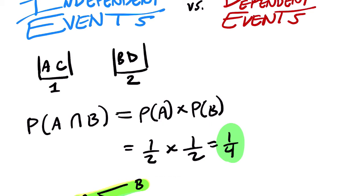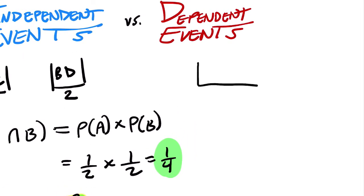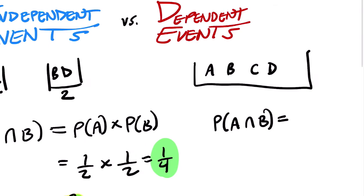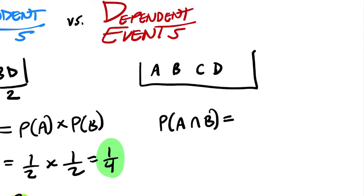But what if we put all of those letters — A, B, C, and D — in one big bucket? If I asked you what's the probability of getting an A and a B, it depends on how the game works. I'm going to assume we do not replace the letters. So starting with A: the probability of getting an A is one out of four, since there's one A out of all four letters.